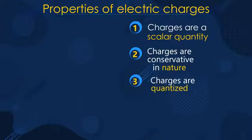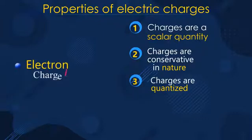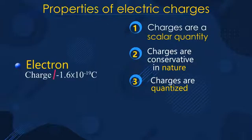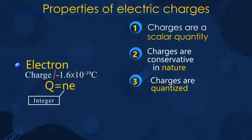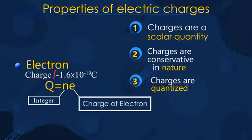The third and final property says charges are quantized. The charge of an electron, −1.6 × 10⁻¹⁹ coulomb, is the smallest amount of charge that can be present in any body. All other charges are nothing but an integral multiple of this smallest charge. So charges can be expressed as Q = Ne, where N is an integer and e is the charge of an electron.